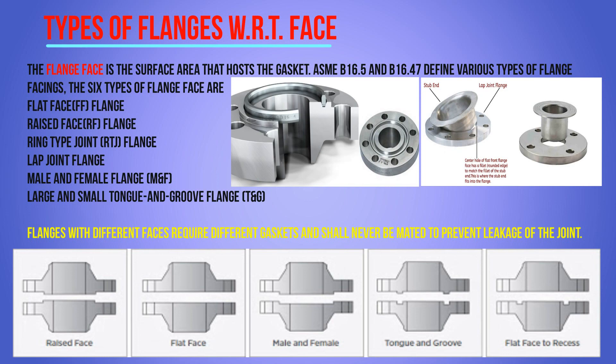Types of flanges with respect to face: a flange face is the surface area that hosts the gasket. ASME B16.5 and B16.47 define various types of flange facings. There are six types: flat face flange, raised face flange, ring type joint flanges, lap joint flanges, male and female flanges, and tongue and groove flanges. Flanges with different faces require different gaskets and shall never be mated to prevent leakage of the joint.